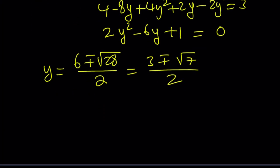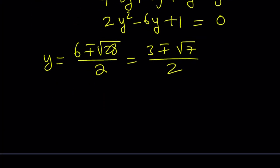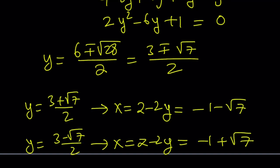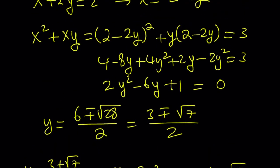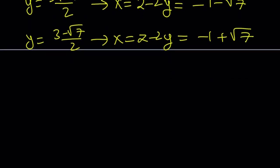These are the y values. Let's go ahead and plug them in to find the x values. And these are going to be the x values for the first set, which is x equals 2 minus 2y. Now let's go ahead and do the same thing for the other solution.